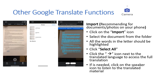Import — recommended for documents or photos on your phone. Click on the import icon and select the document from the folder. All the words in the letter should be highlighted. Click Select All, then click the arrow icon next to the translated language to access the full translation. If needed, click on the speaker icon to listen to the translated material.